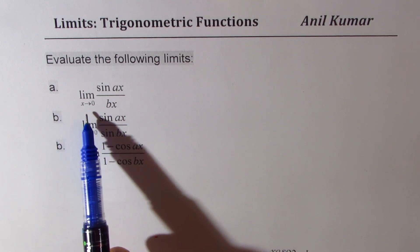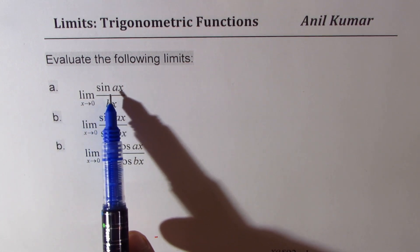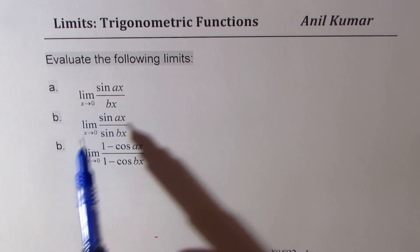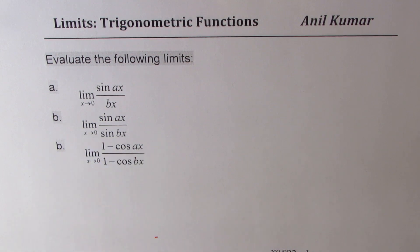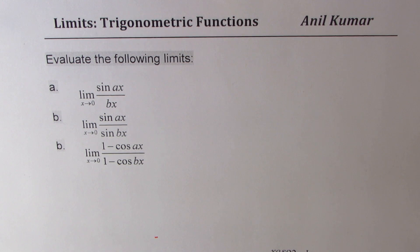Limit when x approaches 0 for sine ax over bx; limit when x approaches 0 for sine ax over sine bx; and limit when x approaches 0 for 1 minus cos ax divided by 1 minus cos bx. You can always pause the video and look into my suggestions.